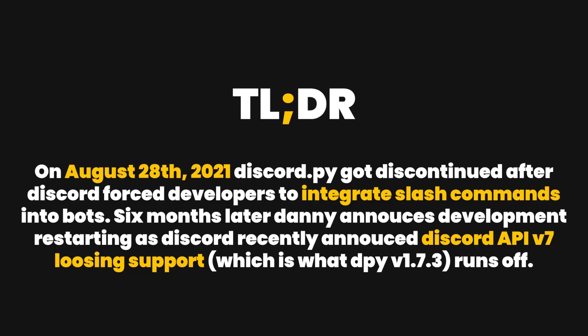If you've caught wind of what's been going on in the Discord developer community lately, you might have heard that Discord.py has made a return. On August 28th of 2021, Discord.py officially closed as Discord was pushing slash commands upon users and the creator of Discord.py, Danny, didn't like that. He felt it was wrongful, so he ended development of Discord.py, and it hadn't received any updates for around six months. But Discord.py finally made a return.